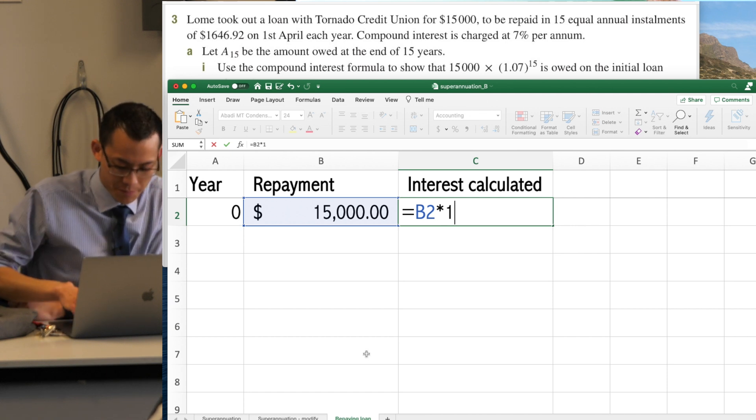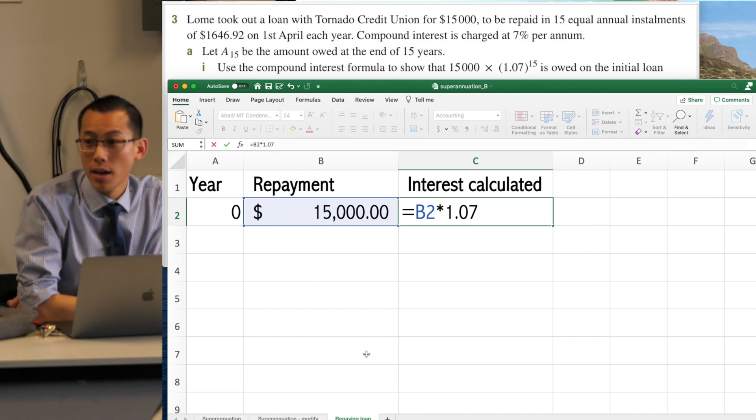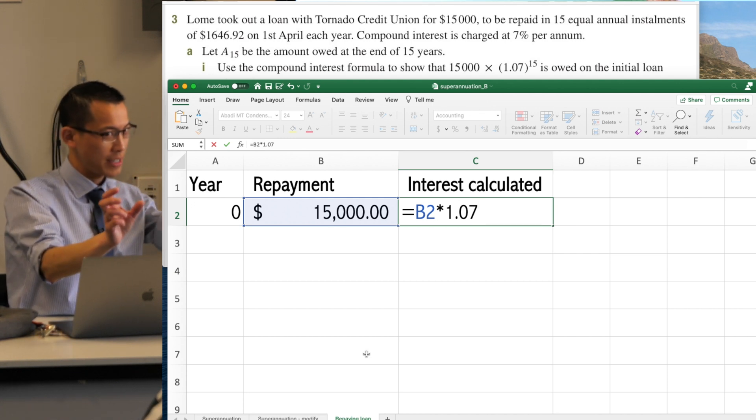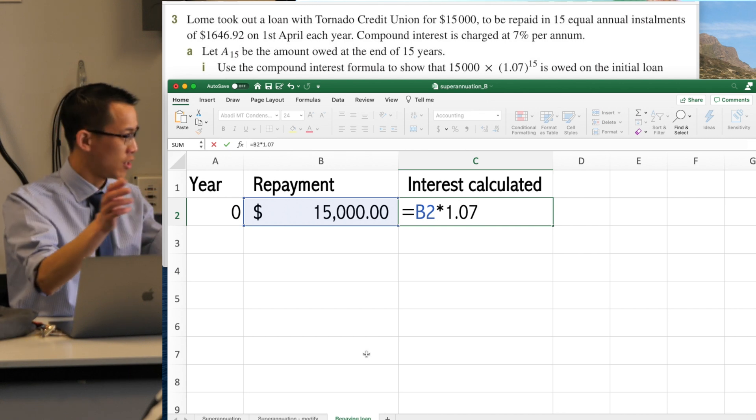1.07. So what this does is it captures the amount that's already there, that's the 1, and then it adds on the interest calculation, that's the 0.07. Are you with me? Okay.